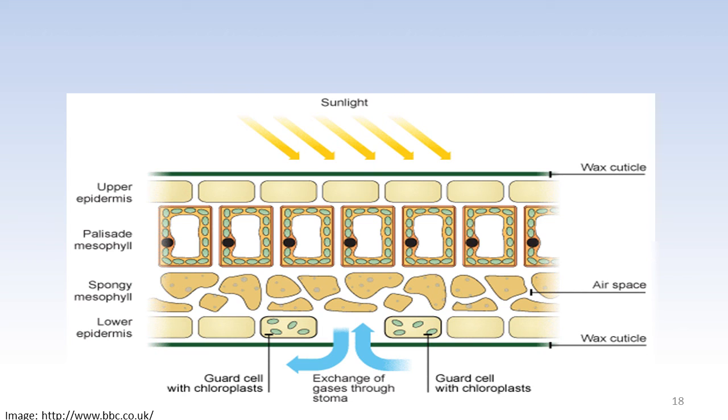The spongy mesophyll layer contains cells that are a bit far from each other. These are airspaces and they allow gases to move freely. So while examining a plant or any other organism, we observe that their structures are usually adapted in a manner that allows them to carry out their functions effectively.